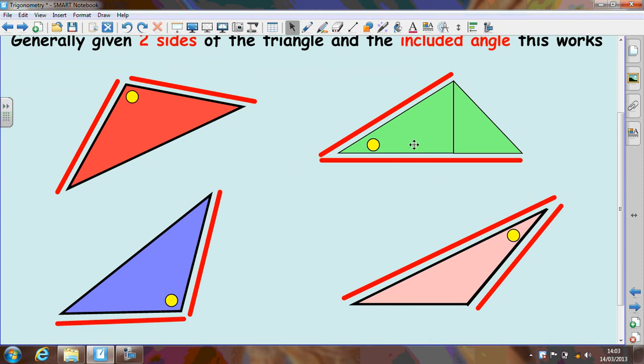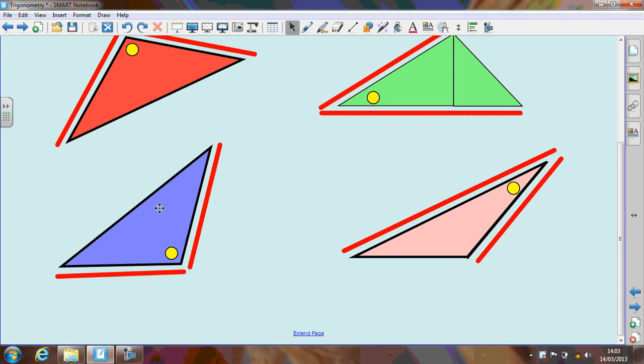So in the second triangle here we need this side, that side and the angle in the middle. On this third one here we need this side and this side and the angle in the middle.